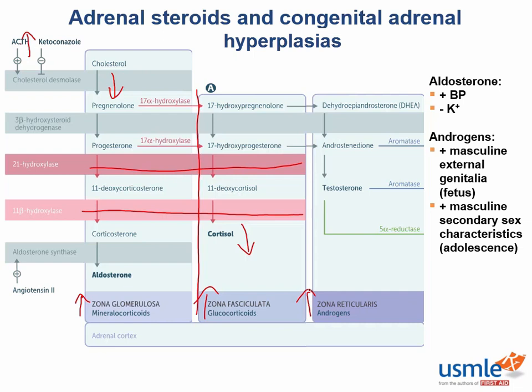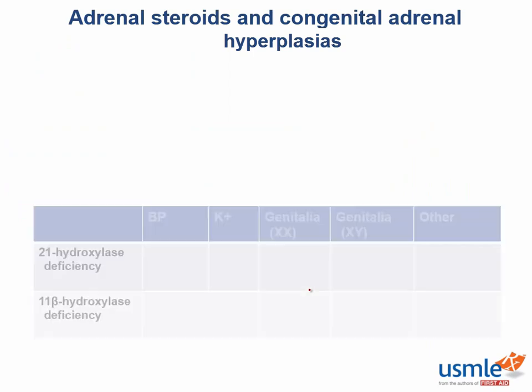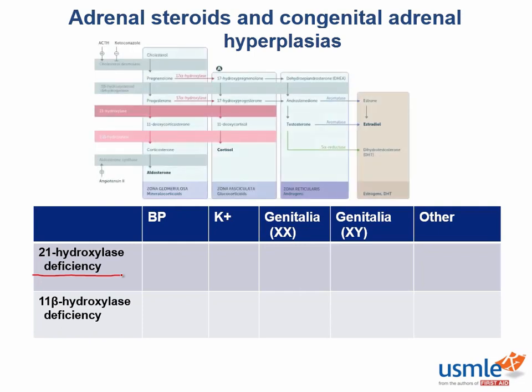What would you phenotypically expect from the most common form of CAH — 21-hydroxylase deficiency? A 21-hydroxylase deficiency shuts down synthesis of mineralocorticoids and cortisol, leaving behind only the sex steroid pathway. And because the pituitary assumes that if there's not enough cortisol the whole adrenal gland needs a kick in the pants, that means there's going to be a serious excess of adrenal androgens.